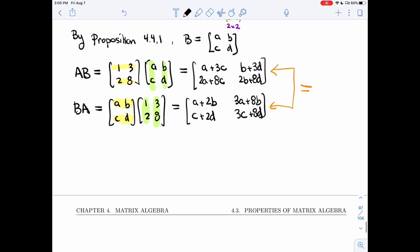So here's the system we'll get. We'll get the first entry should be the same. So A plus 3C is equal to A plus 2B. The second one will be the same. So B plus 3D equals 3A plus 8B. Then 2A plus 8C equals C plus 2D, and we get 2B plus 8D equals 3C plus 8D.